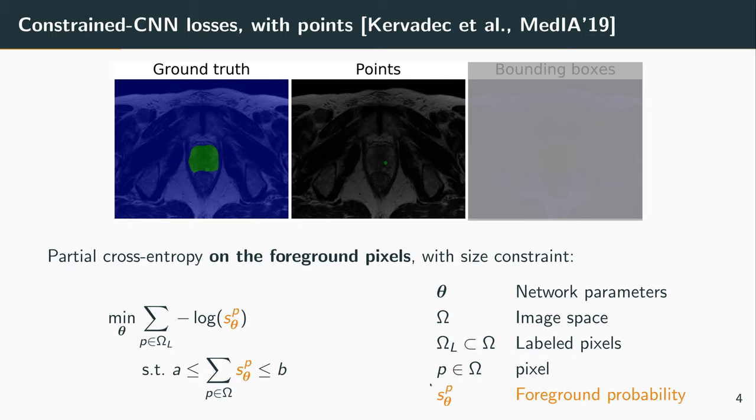And sp of theta are the foreground probabilities, the softmax output of our neural network. So what we did in that work was to apply a usual cross-entropy loss, but only on the pixels that have a label, which is not sufficient to train a network successfully.